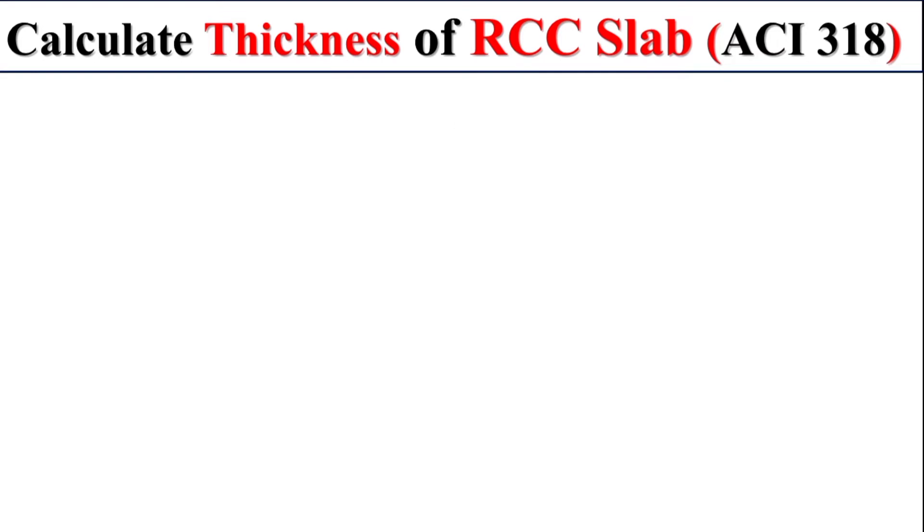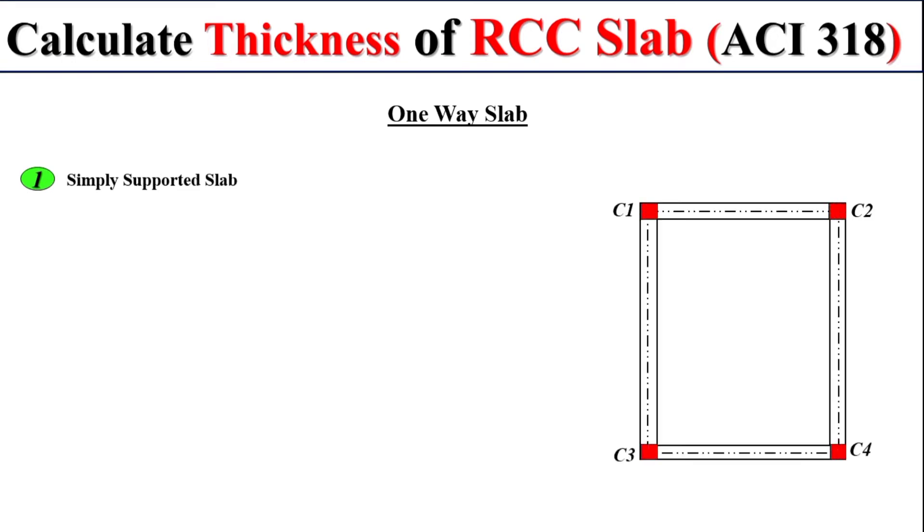Now first of all, come to the one-way slab and study how we can calculate the simply supported slab thickness. Let's suppose that we have a slab having the shorter span length of S and the longer span length of L. Remember, if we are interested to calculate the thickness of this simply supported slab, so we have a formula.